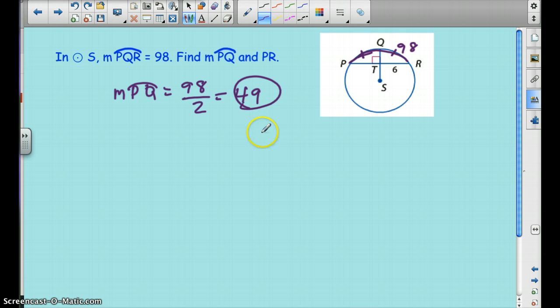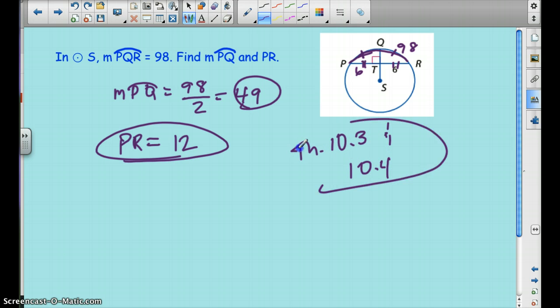So then we can say that PR is also bisected here, and these two are congruent. So if TR is 6, then PT is also going to be 6, so then PR is going to be 12. And that's using theorems 10.3 and 10.4. So you've got to make sure you have those in your packet.